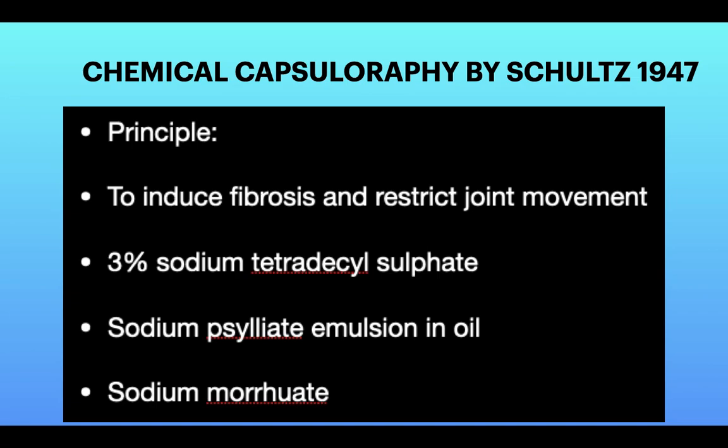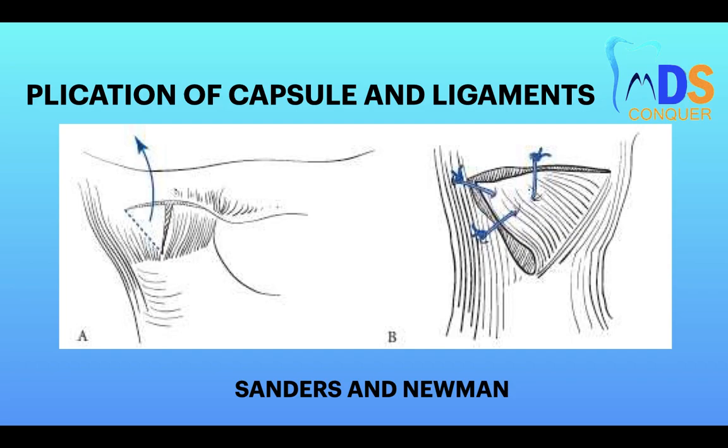Chemical sclerotherapy, described by Schultz in 1947, works on the principle of inducing fibrosis and restricting joint movement. He used 3% sodium tetradecyl sulfate, sodium psylliate emulsion in oil, or sodium morrhuate.